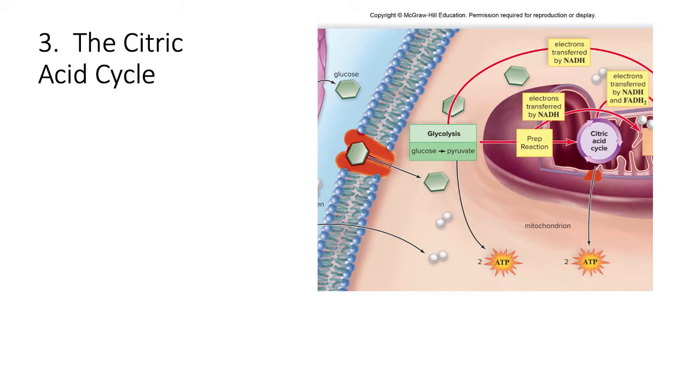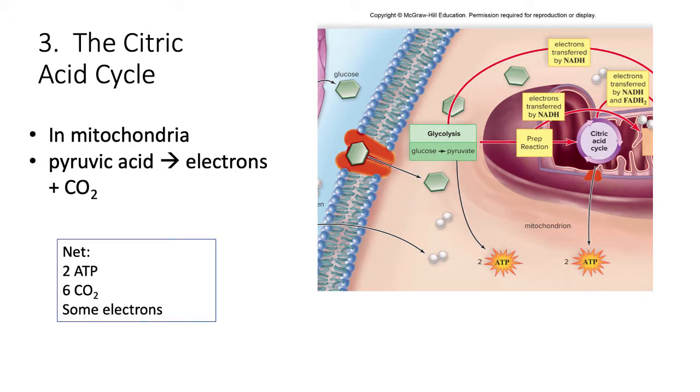The third stage of cellular respiration is the citric acid cycle. This happens in the matrix, or inner part of the mitochondria. The pyruvate molecules are broken down in a stepwise fashion to release the electrons shared in the bonds. In doing this, the three carbons join together with oxygen and become the waste product, CO2. This is where all the CO2 we breathe out comes from. It is waste from cellular respiration. The net products are two ATP, six carbon dioxide, and some electrons, which are carried to the electron transport chain.